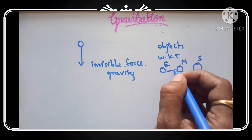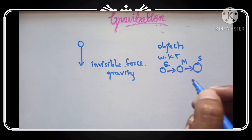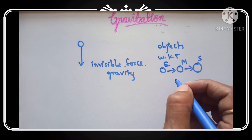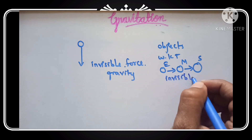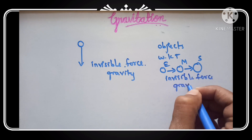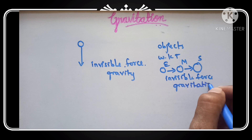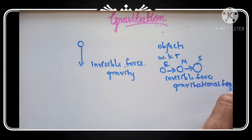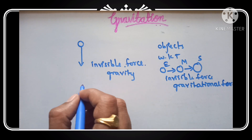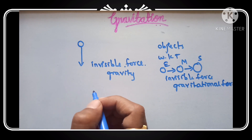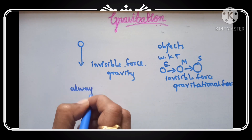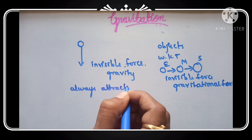The moon pulls the earth and the sun pulls the moon. All the other planets also pull with an invisible force — an invisible force which is known as gravitational force. So that invisible force is known as gravitational force. You know that in the universe, all the bodies pull each other. All the bodies will pull each other because of the gravitational force. So the gravitational force is always attractive.